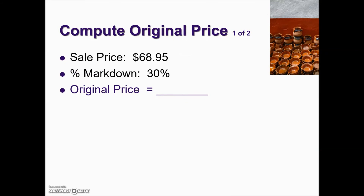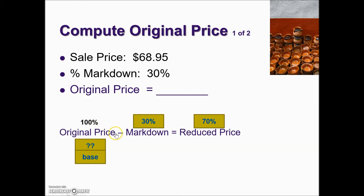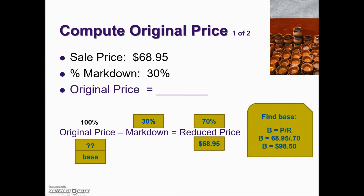Here we're given a sales price and a percent markdown, and they're asking us for the original price. Using the reduced price formula as our framework, the original price is associated with 100%, so it's the base. We're given a markdown percentage of 30%, and using the framework formula, 100% minus 30% tells us the reduced price represents 70% of the original price. We know what that sales price is, so we have two of the three components. We have a rate with an associated part, allowing us to solve for the base. Base equals part divided by rate, giving us an original price of $98.50.